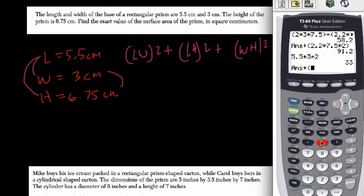I'll put parentheses here, length by height, 5.5 times 6.75 times 2. Close parentheses, and then plus 2 times the width, 3, times the height, 6.75. Close parentheses.